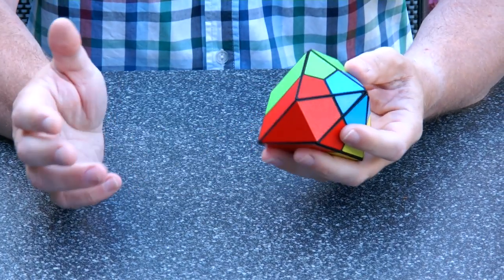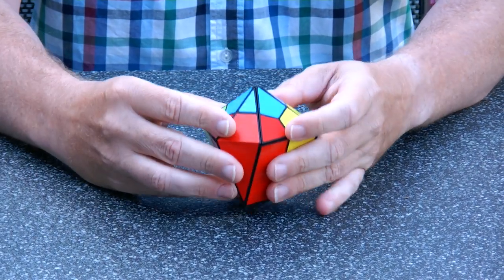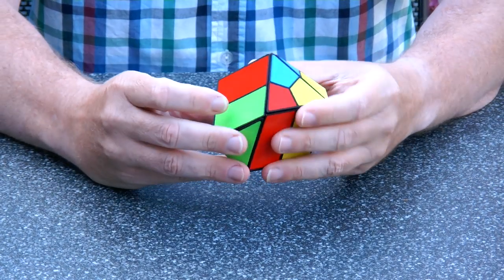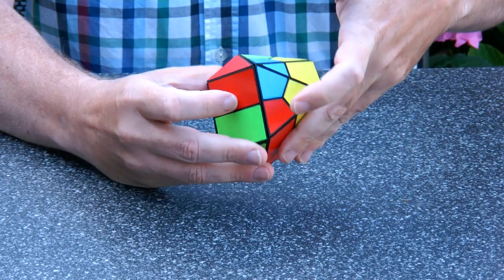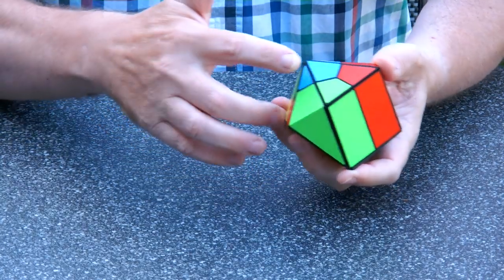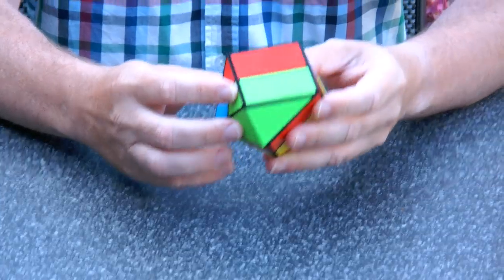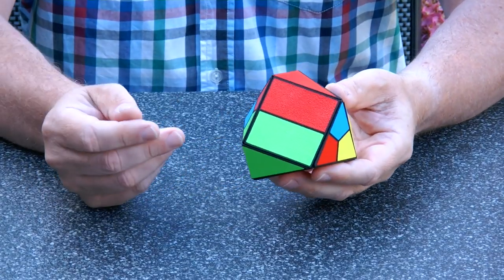Also the puzzle has only three principal states. It has the mushroom state. And we have the state like this. Where we have two triangles here. Two triangles there. And other than the colors, it's symmetrical. I call this the left-handed state.